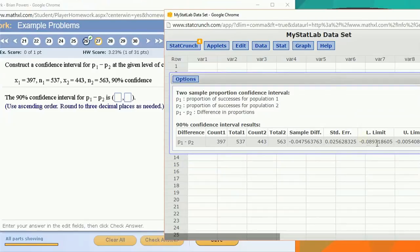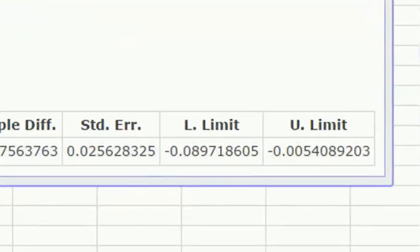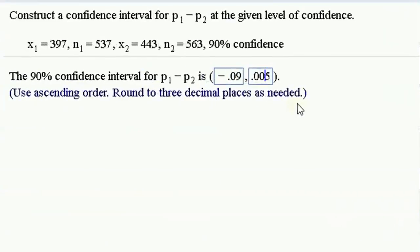Just click compute, and we've got it. So we've got a lower limit and an upper limit for our confidence interval. It's negative 0.08, three decimal places, that rounds up to negative 0.09, and 0.005. Oh, it's negative. Don't want to make that mistake.